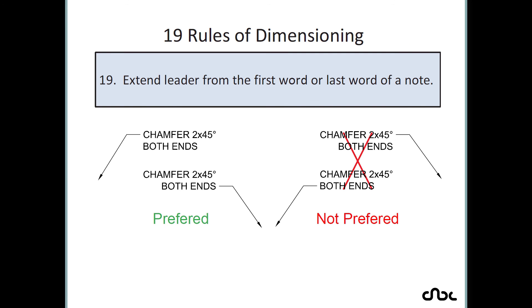Rule number 19: extend the leader from the first word or last word of the note. When you place a note with a leader line, the leader should start from either the first word or the last word of that note. It should not start from a middle word. So the leader must begin at either the start or the end of the annotation text.